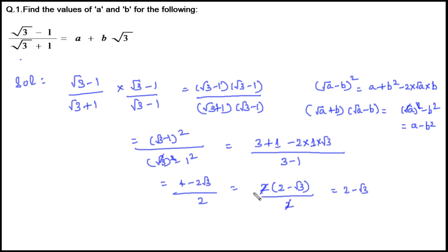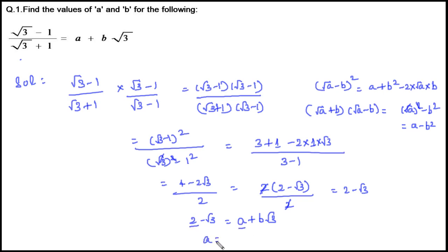Now let's compare this with the right-hand side. We have 2 − √3 = A + B√3. Comparing the rational part, A = 2. And B is the coefficient of √3, so B = −1.